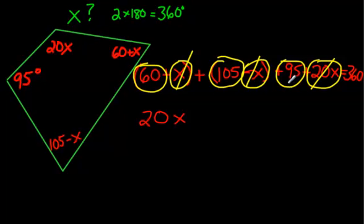265, take away 5, 20x plus 260 equals 360.